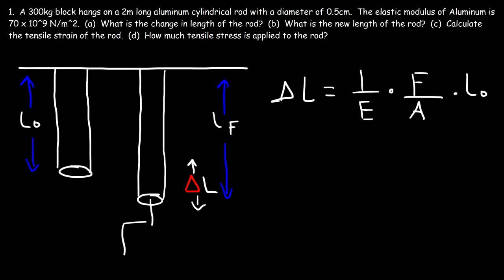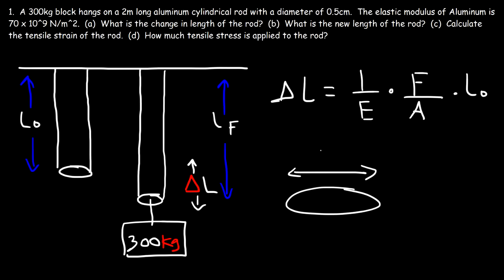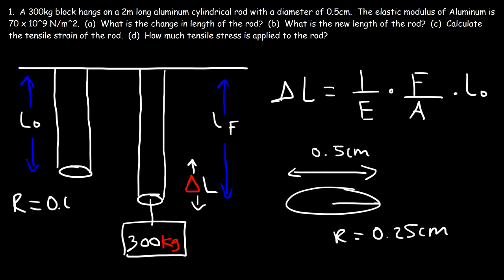We still have a 300 kilogram mass hanging on the rod. We're given the diameter of the cylindrical rod, so I'm just going to draw a bigger version of that circle. The diameter is 0.5 centimeters, which means the radius is half of that — 0.25 centimeters. We need to convert the radius from centimeters to meters by dividing by 100, giving us 0.0025 meters.